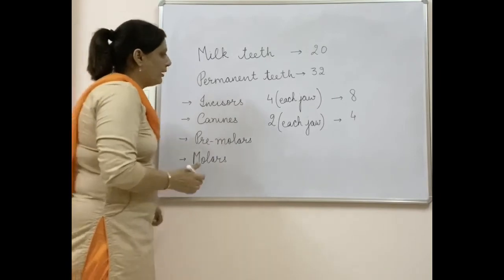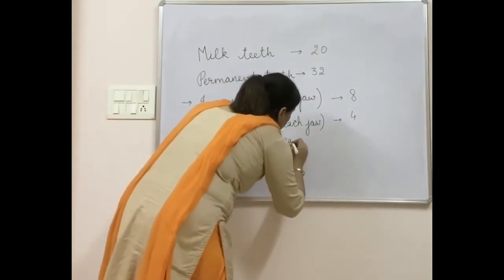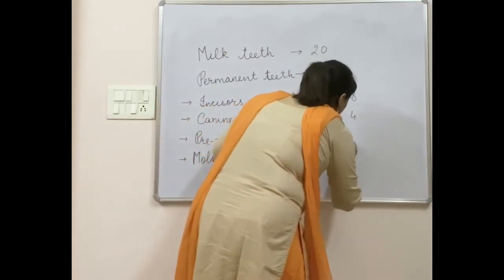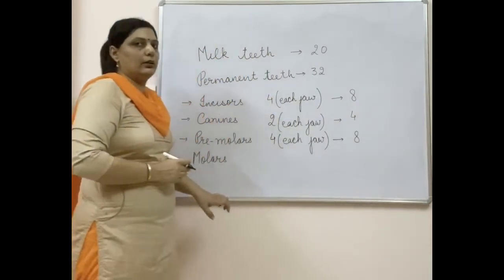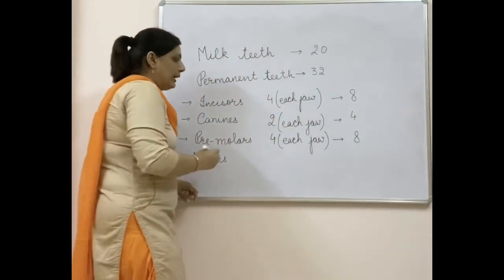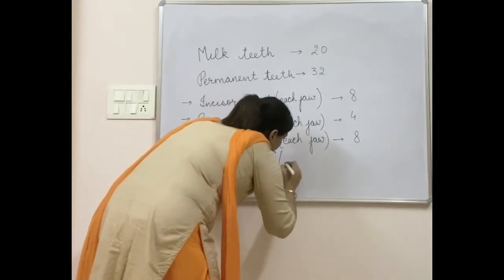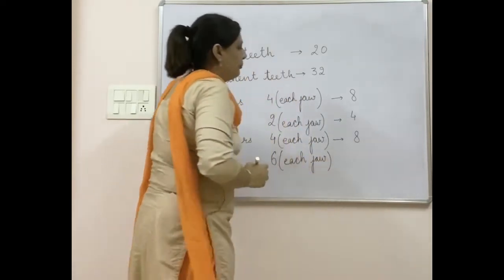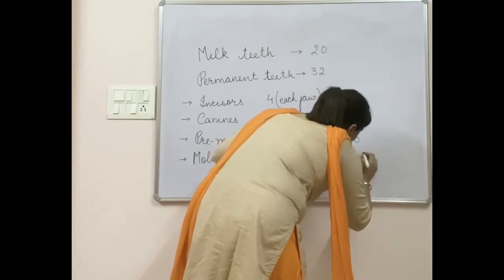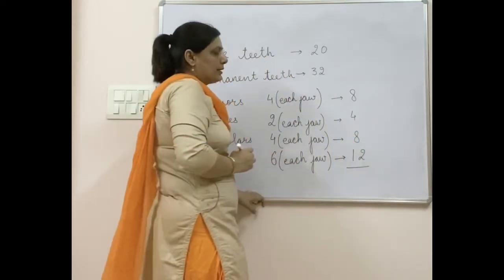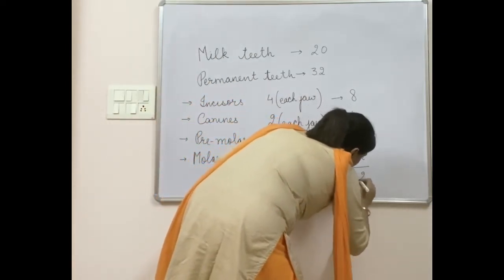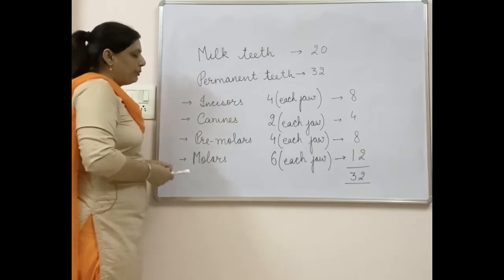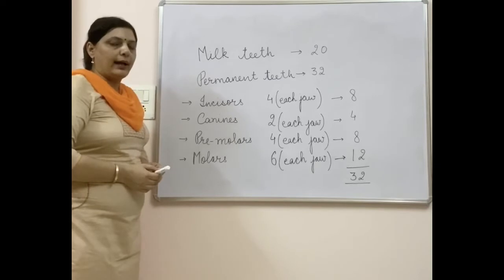After the canines there are four pre-molars in each jaw, two on either side of the canine, making a total of eight pre-molars in the buccal cavity. After pre-molars we have molars — six in each jaw, three on either side of the pre-molars, making a total of twelve molars. When totaled, this gives 32 teeth in the permanent set.